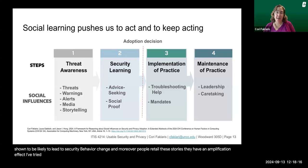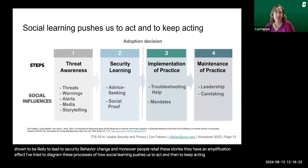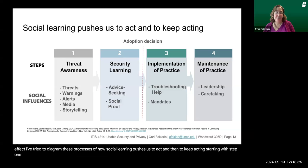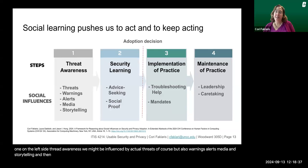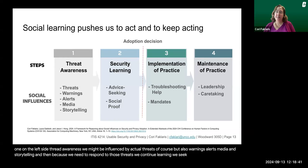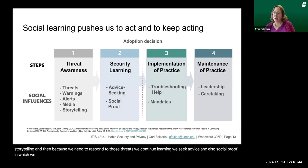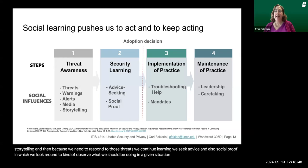In my work, I've tried to diagram the processes of how social learning pushes us to act and then to keep acting. Starting with step one — threat awareness — we might be influenced by actual threats, but also warnings, alerts, media, and storytelling. Because we need to respond to those threats, we continue learning, seek advice, and also social proof — observing what others are doing in a situation — can have a powerful effect.